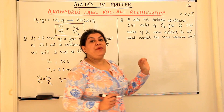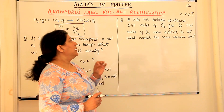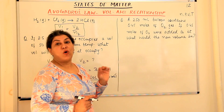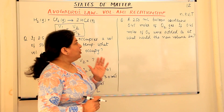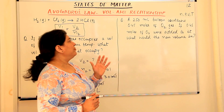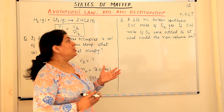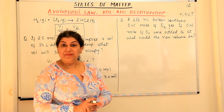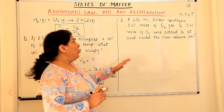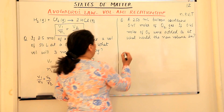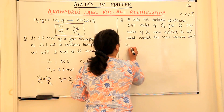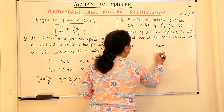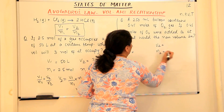Problem 2: A 250 ml balloon contains 0.45 moles of oxygen gas. If 0.45 moles of oxygen were added to it, what would the new volume be? We are again looking for the four variables: V₁, N₁, V₂, and N₂.